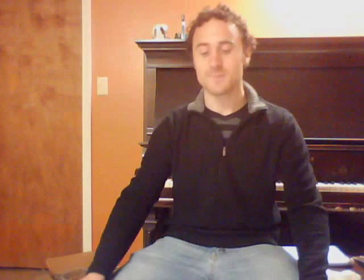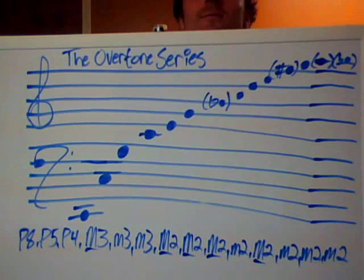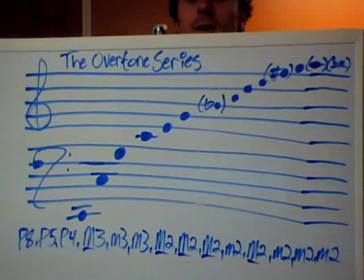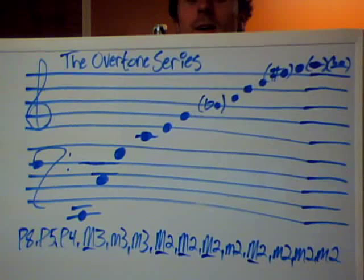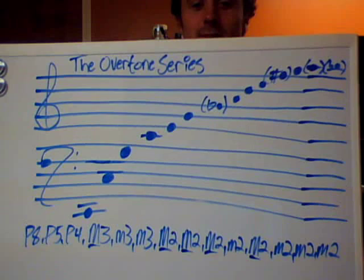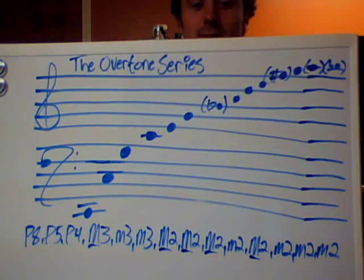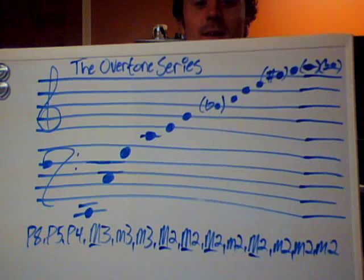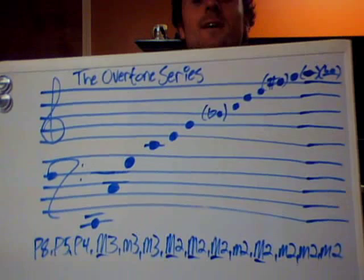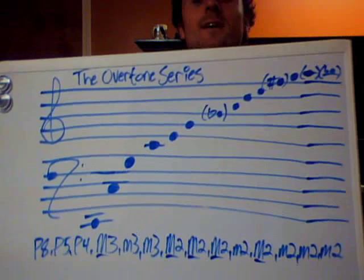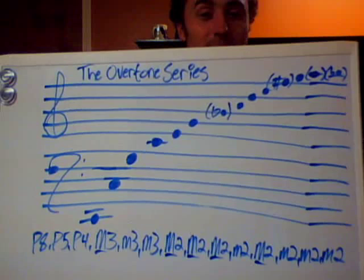All of this is based on an ancient understanding of something called the overtone series, which is what I'm showing you right now. In our tonal system with the grand staff, you can see I have the overtone series on the grand staff, and below you can see the essential intervals to the overtone series. I'll get into that a little later, because that is an essential element to understanding the minor scales.